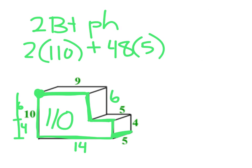And then I'm ready to type that into my calculator. 2 times 110 plus 48 times 5. That's of course 220 and that is 240. And I'm going to get 460 units squared.